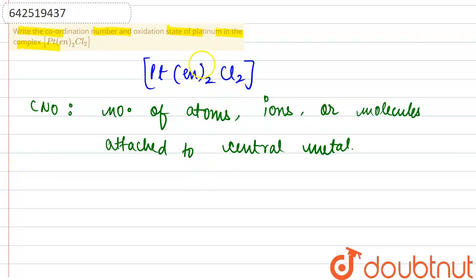If we observe, it is basically attached to 2 EN2. What is EN? EN is basically a bidentate ligand, ethylene diamine. It is a bidentate ligand.